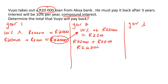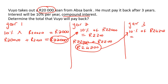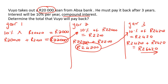Now moving into year number three, this number here becomes our new starting number. So then it becomes 10% of 24,200, and that'll be 2,420 rand. And so if you then say 24,200 plus 2,420, that'll give us 26,620. And that'll be your final answer.